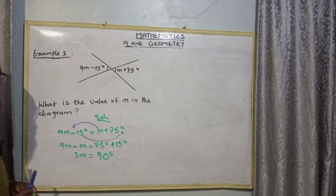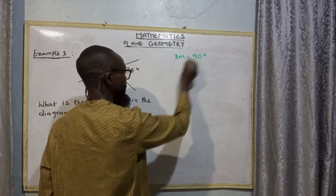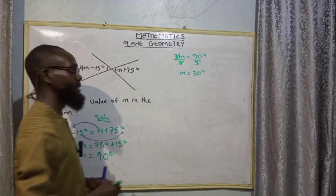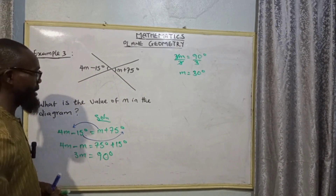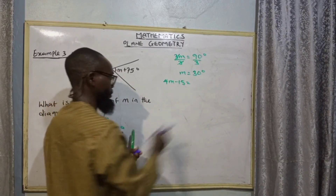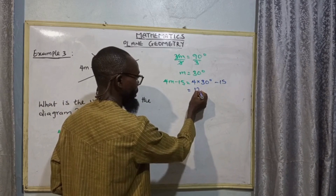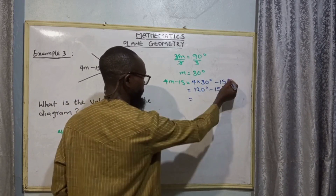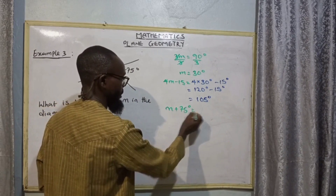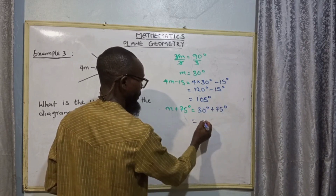4M minus M gives 3M, which equals 75 + 15 = 90 degrees. To find the value of M, divide both sides by 3. So 3M = 90 degrees divided by 3, giving M = 30 degrees. So the value of M is 30 degrees, meaning the angle here must be equal to the angle on the other side.